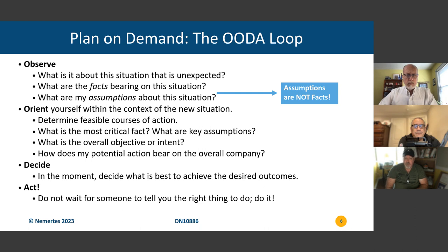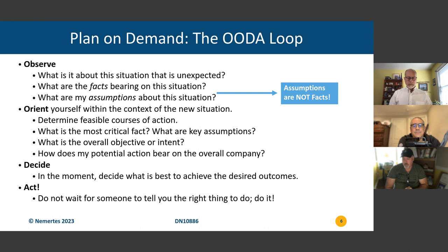So after you do all these things, you decide what to do. And then once you decide, you act. In a culture of mission command — what the Germans, the Prussians, called Auftragstaktik, which is badly translated as mission command — you saw what was going on and thought, I've got the intent, so I'm going to do it, and this is how I'm going to do it.